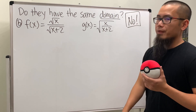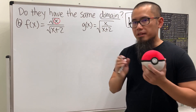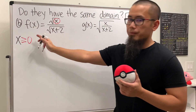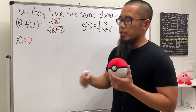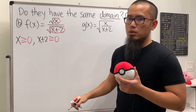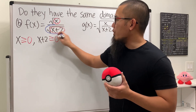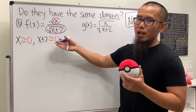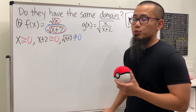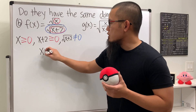For f of x, we have square root of x, so make the inside greater than or equal to zero: x must be greater than or equal to zero. We also have square root of x plus 2, so x plus 2 must be greater than or equal to zero — meaning x is greater than or equal to negative two. Additionally, since that square root is on the bottom, square root of x plus 2 cannot equal zero, so x cannot equal negative two.